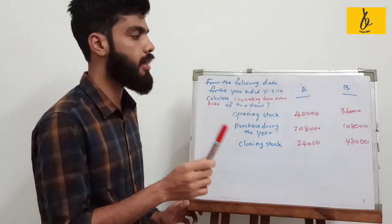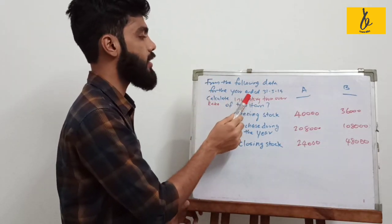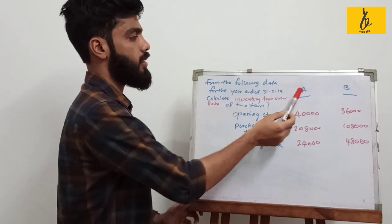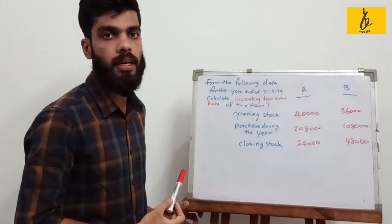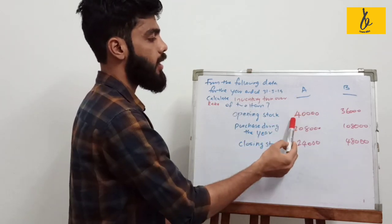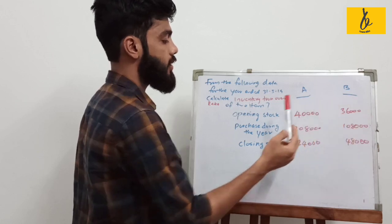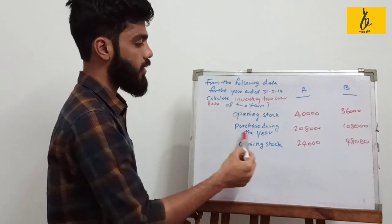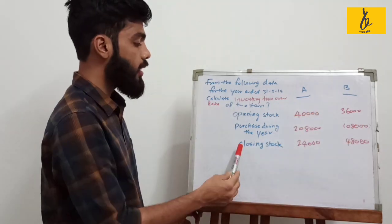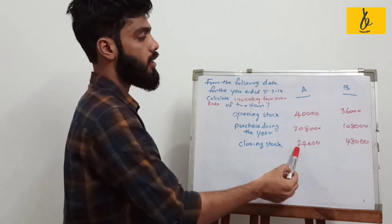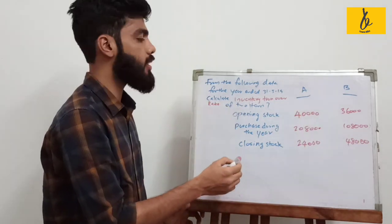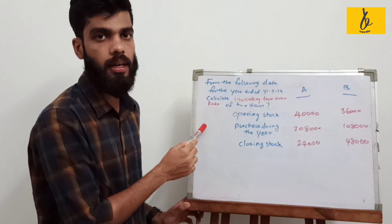For the following data for the year ended 31st March 2019, calculate the inventory turnover ratio for two items. The opening stock data is 40,000 and 36,000. Purchases during the year are 2,08,000 and 1,08,000. Closing stock is 24,000 and 48,000.